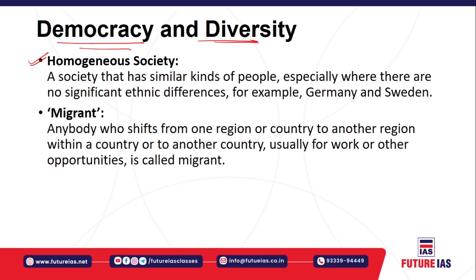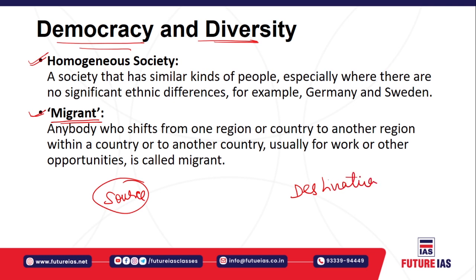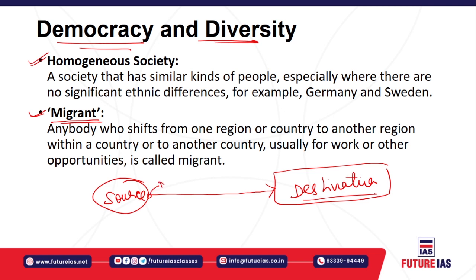Society which has differences in terms of ethnicity, customs, origin, and ancestors is called heterogeneous society. The term migrant refers to any person who basically moves from the source region to the destination region. Such a person is known as a migrant. This process is called migration.